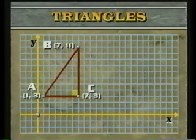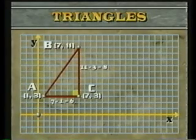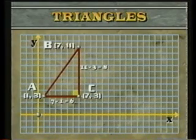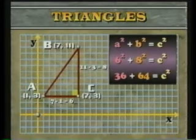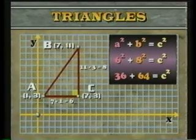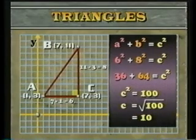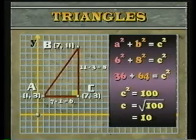Remember that the length of A, C is obtained by subtracting the X coordinates, giving us 7 minus 1, which equals 6. The length of C, B is obtained by subtracting the Y coordinates, giving us 11 minus 3, which equals 8. Using our formula, A squared plus B squared equals C squared. We have 6 squared plus 8 squared equals C squared. 36 plus 64 equals C squared. So C squared equals 100. Then the length of A, B is the square root of 100, which equals 10.